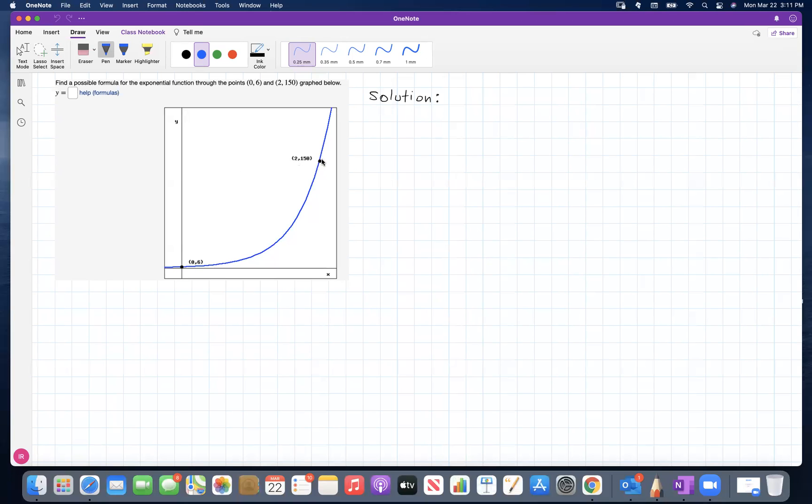Find a possible formula for the exponential function through the points (0,6) and (2,150) on the graph below. Solution.